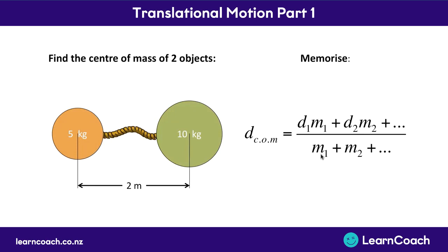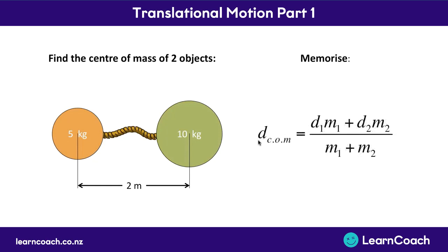Down the bottom we've got the masses — mass 1, 5 kg, plus mass 2, 10 kg. You'll also notice that there's plus dot dot dot on these ones, because you could add together as many disks or as many objects as you wanted. You just keep adding them on: D3 times M3, D4 times M4, and keep adding their masses onto the bottom as well. Now in this case we've only got two, so our distance to the center of mass is just D1M1 plus D2M2 divided by mass 1 plus mass 2.